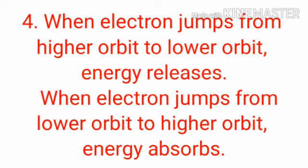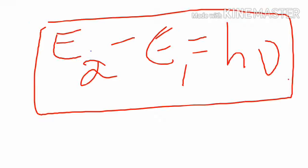For example, if electron present in second orbit, and the electron wants to jump to first orbit. Second orbit means having more energy. And first orbit means having less energy. Therefore, electron jumps from second orbit to first orbit. Then what happens? Energy releases.